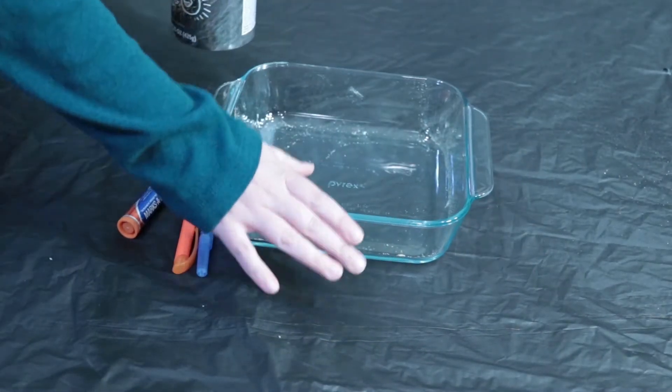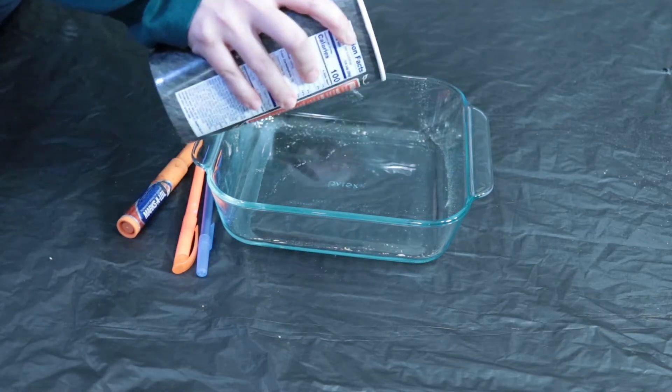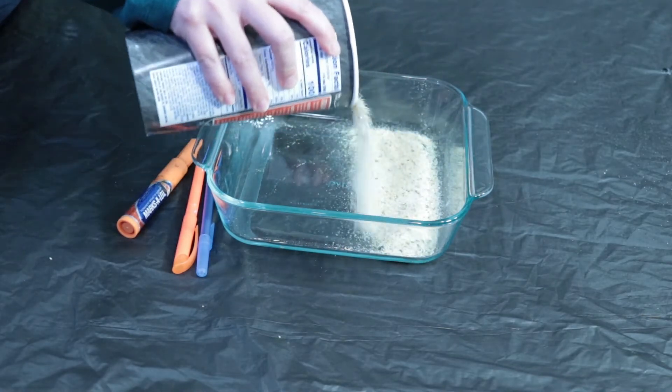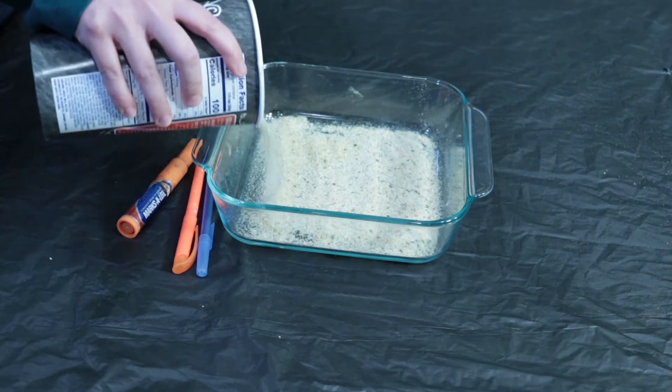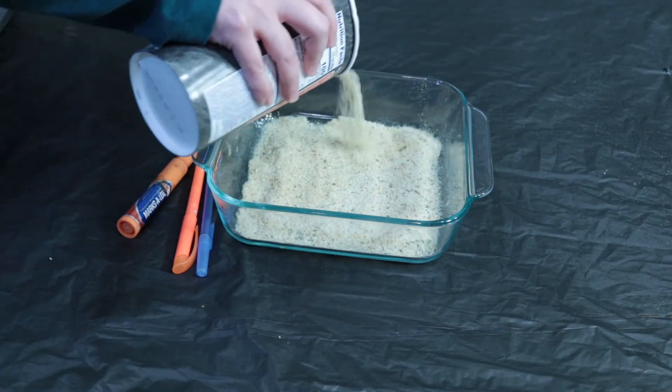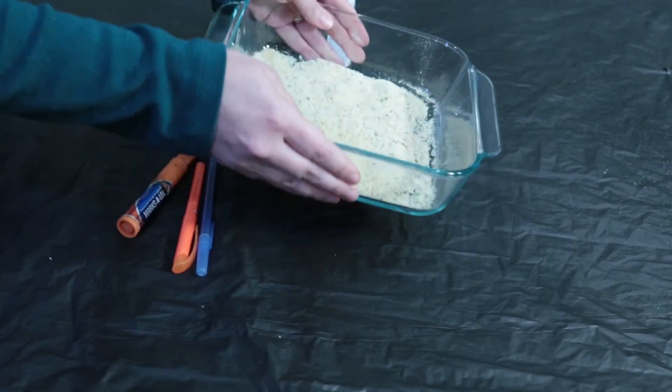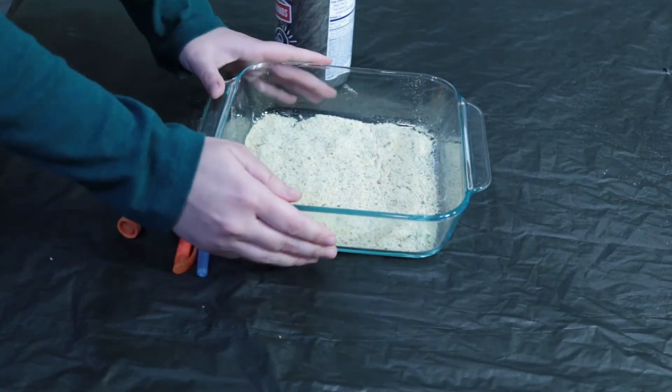So for today's activity, you're going to take your container and you're going to put your drawing material inside of it. I'm using breadcrumbs. Again, you guys could use flour or sugar. Just something that creates an area for the kids to draw in. So once you have that,